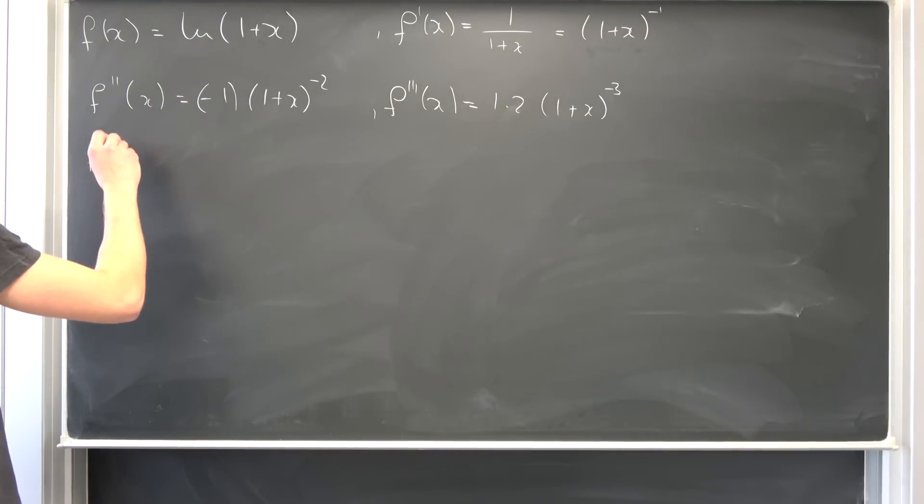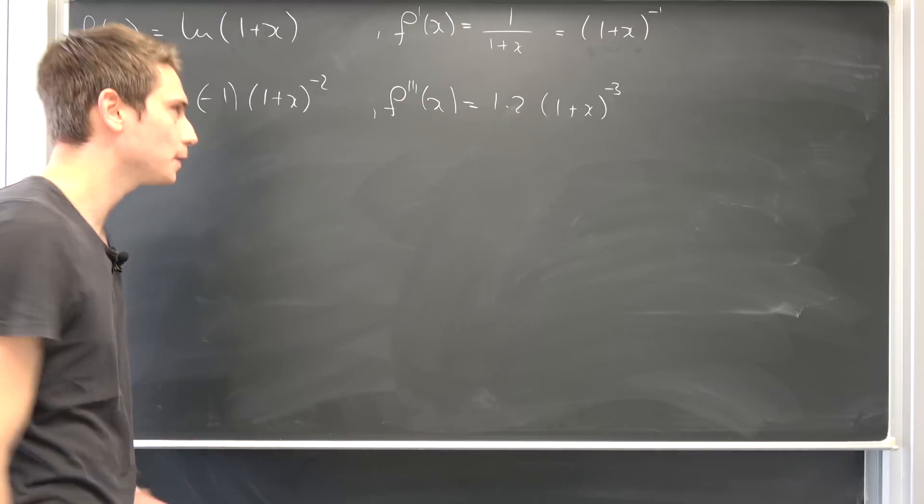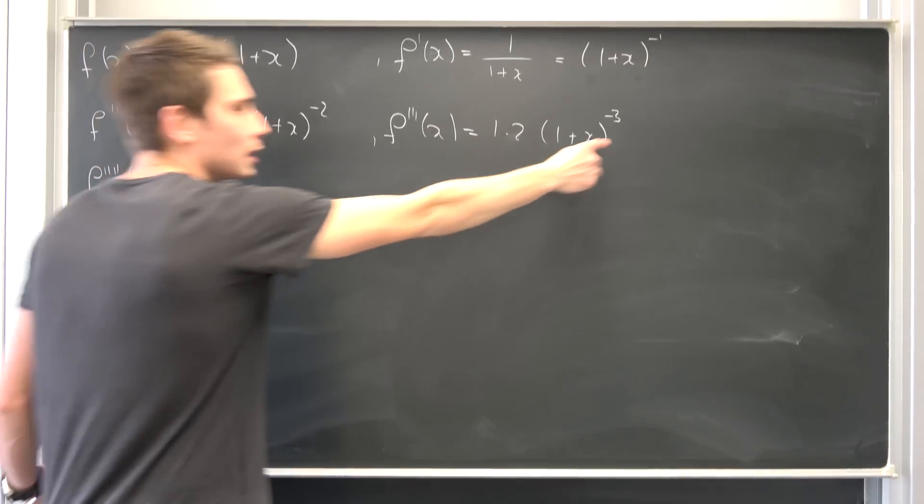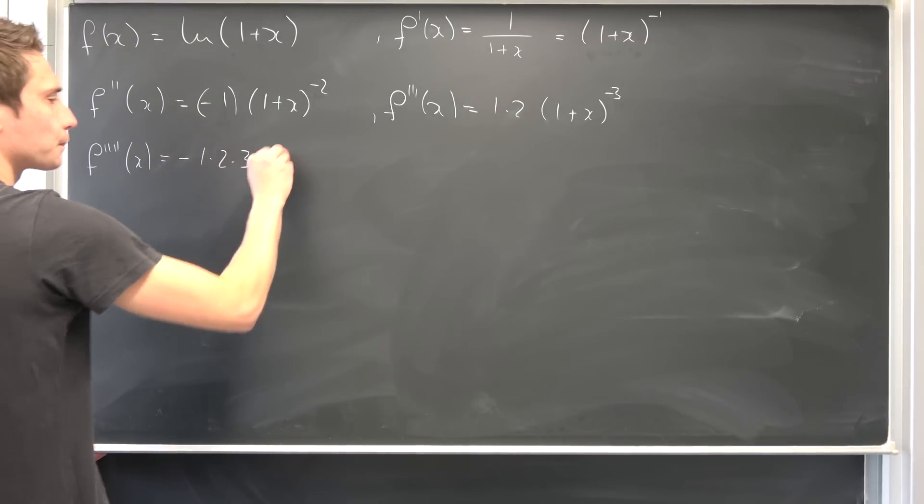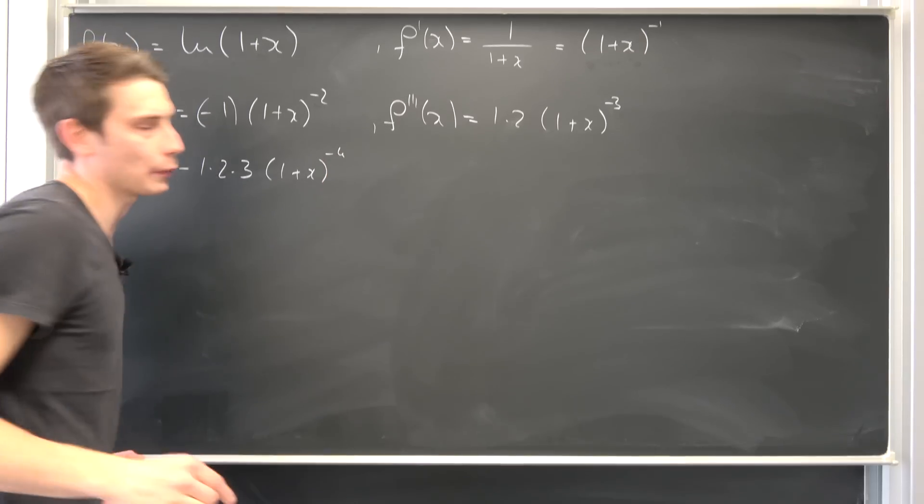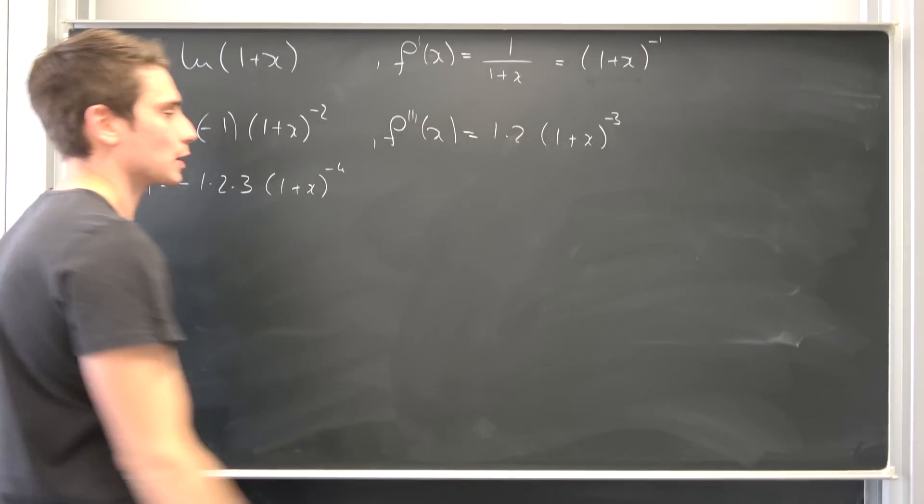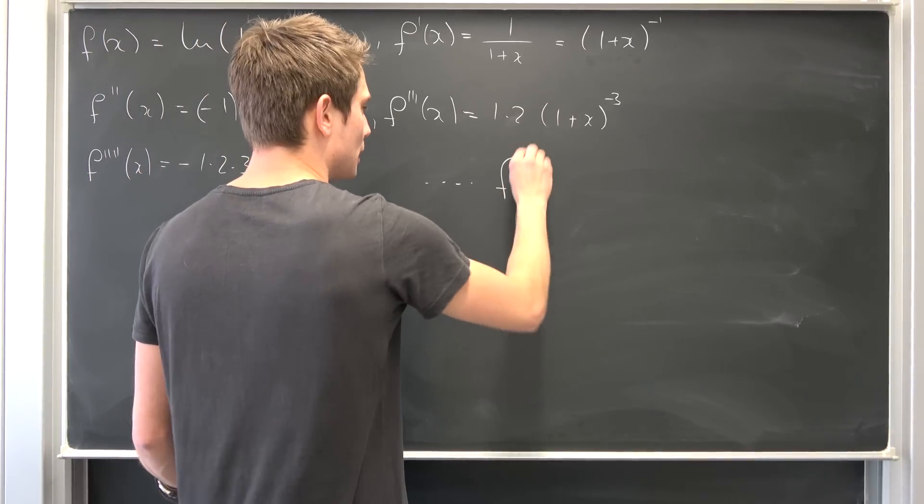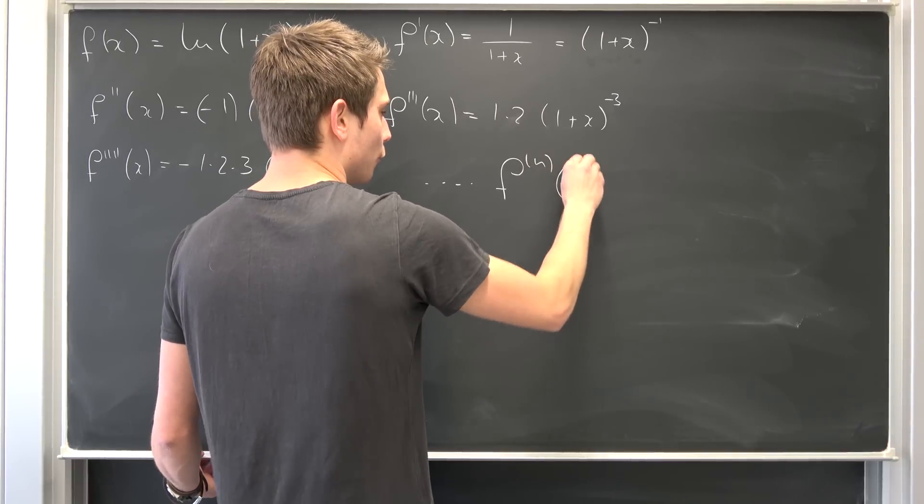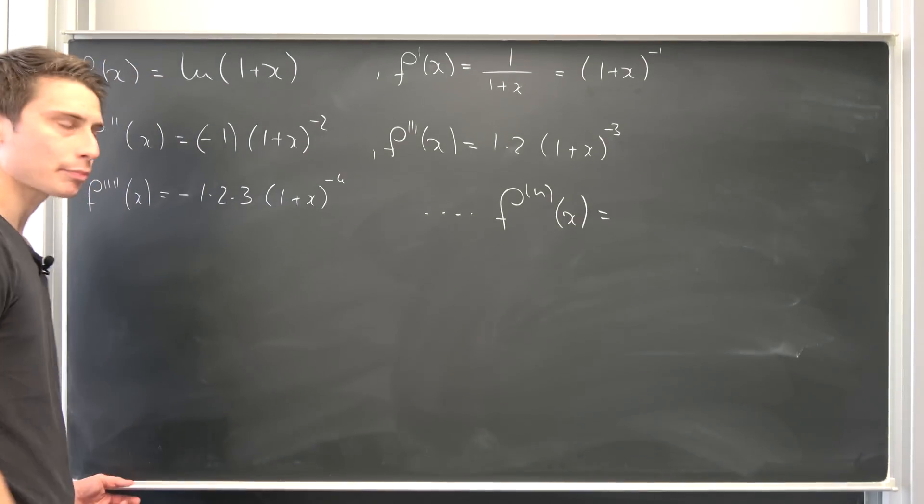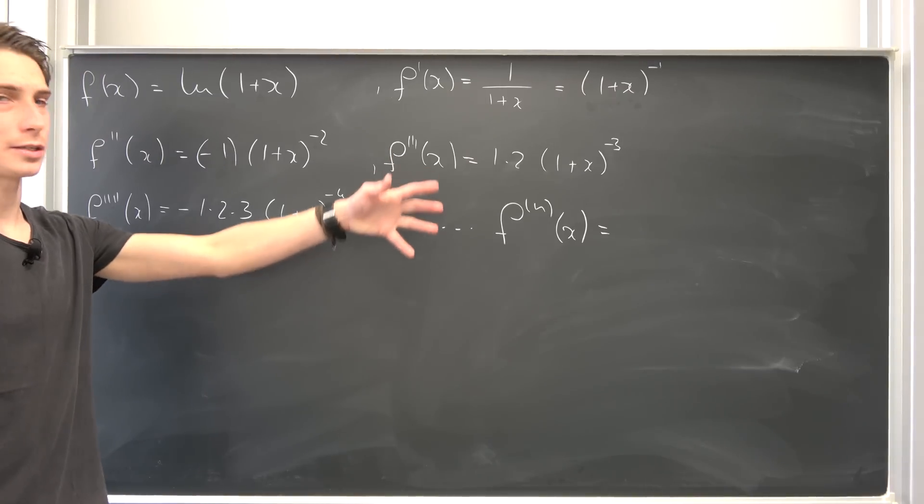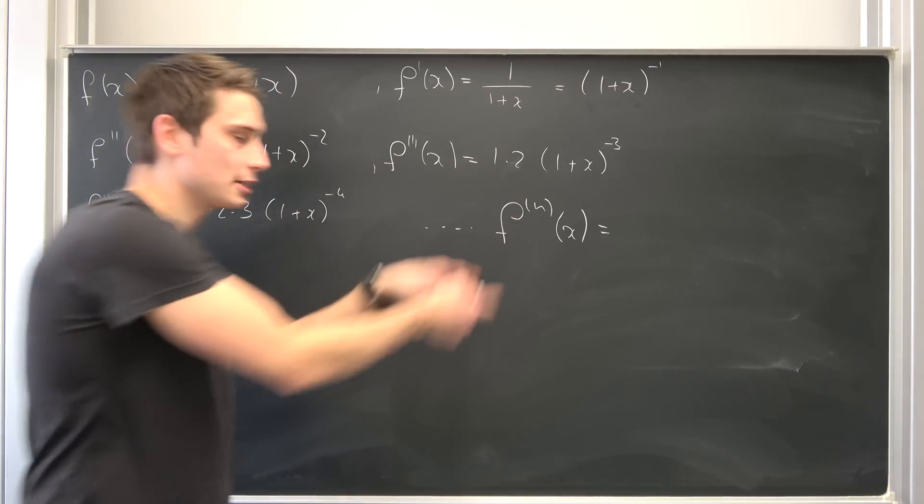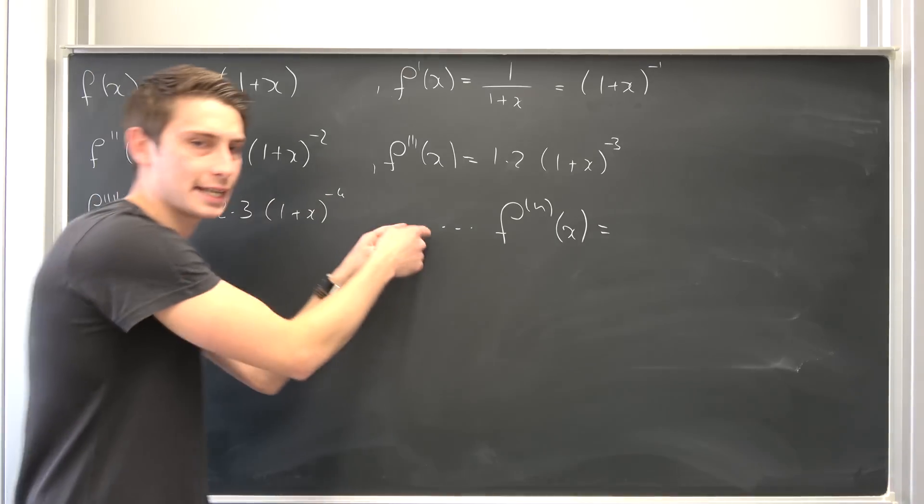One more iteration and then you can already see the pattern. The fourth derivative, quadruple prime, is dragging the negative 3 to the front, so this is going to give us negative 1 times 2 times 3, 1 plus x to the negative fourth power. If we continue this process, we are going to land at the nth derivative of f with respect to x. We are going to have an alternating series, obviously. Negative 1, not negative 1, negative 1, not negative 1, blah blah blah.